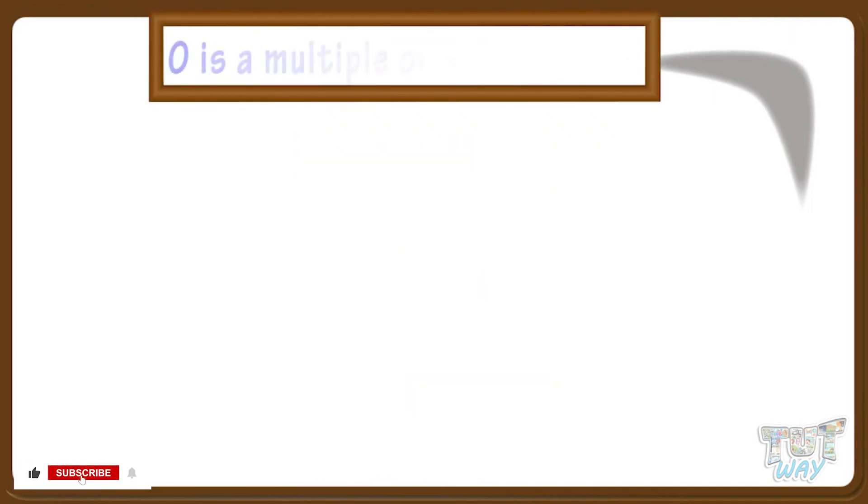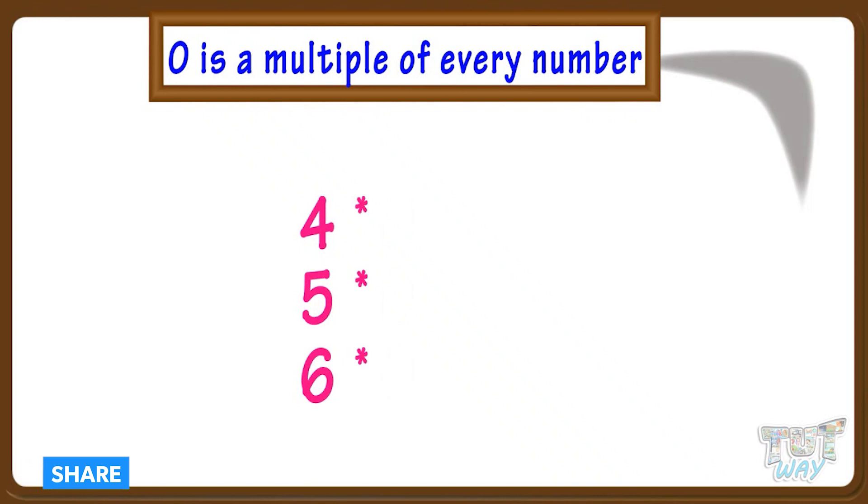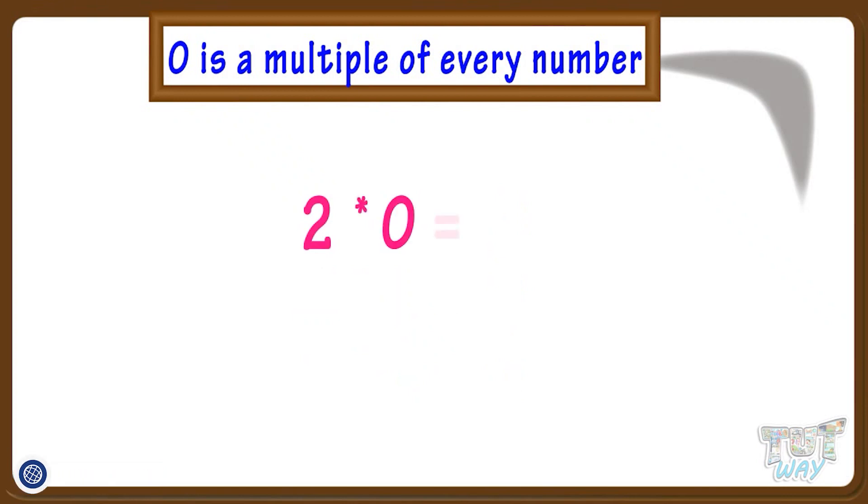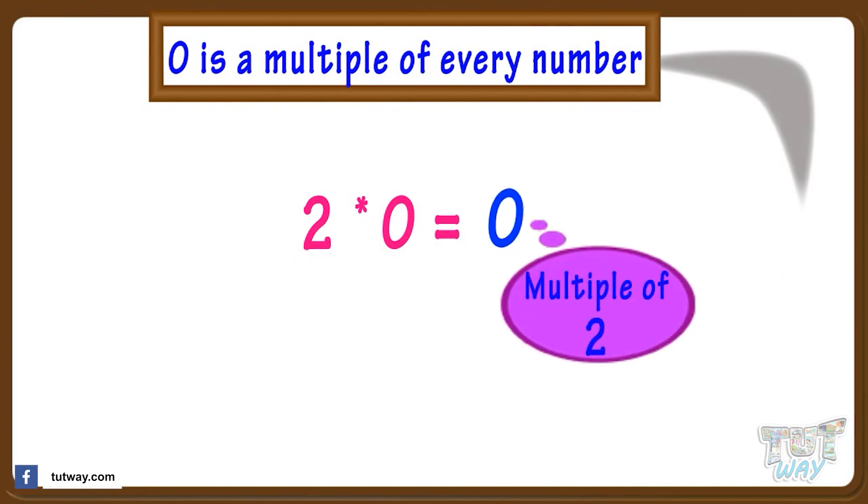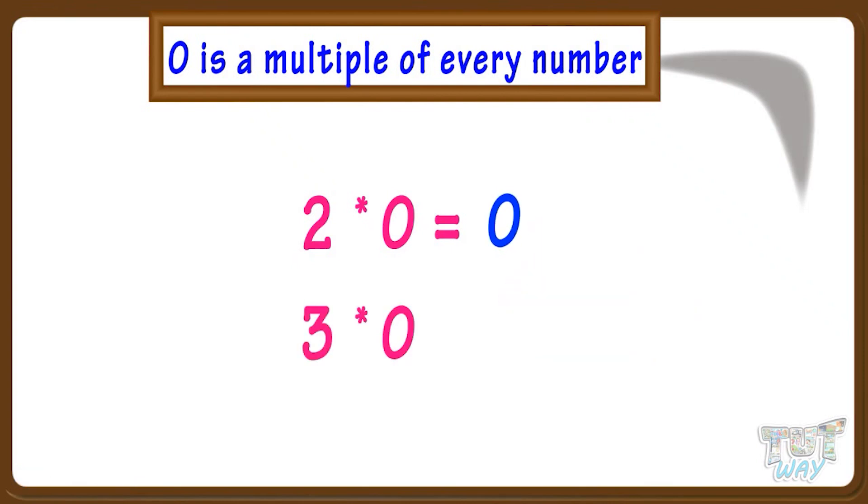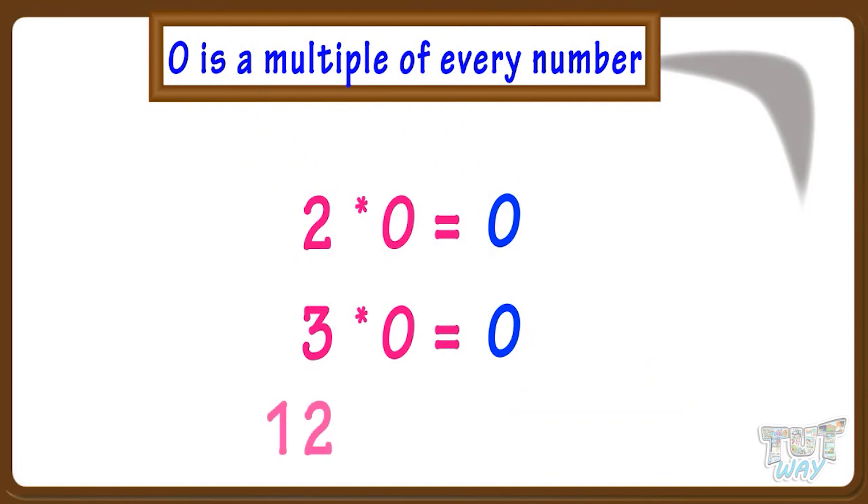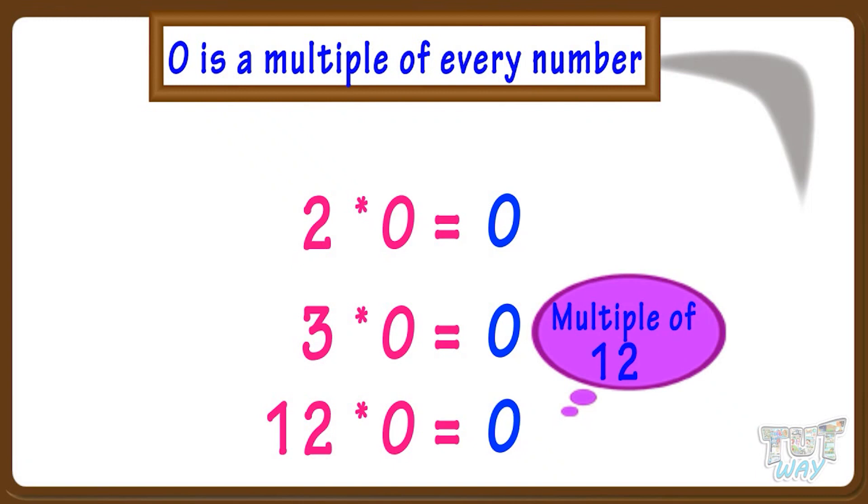Remember, 0 is a multiple of every number as multiple of a number is any number which we get on multiplying it with any number and we get 0 when any number is multiplied with 0. 2 multiplied by 0 equals 0, so 0 is a multiple of 2. 12 multiplied by 0 equals 0, so 0 is a multiple of 12. So 0 is a multiple of every number.